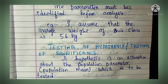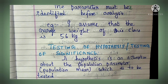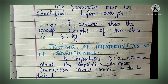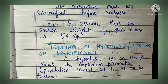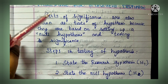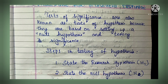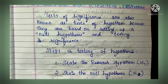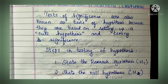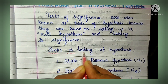So, testing of hypothesis or testing of significance - a hypothesis is an assumption about the population parameter, either population mean or population variance, which is to be tested. What is the procedure for testing of hypothesis? It is based on the setting up of a null hypothesis and testing its significance. First, you formulate a null hypothesis, then you test its significance. There are some basic steps in testing of hypothesis.